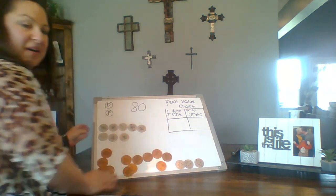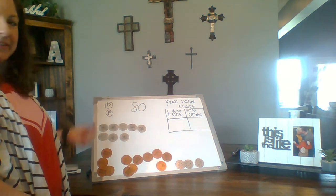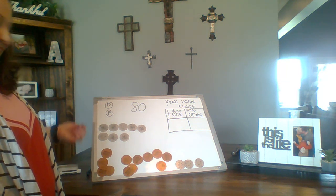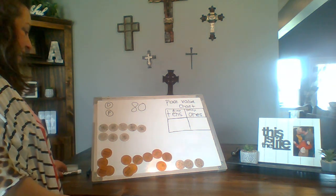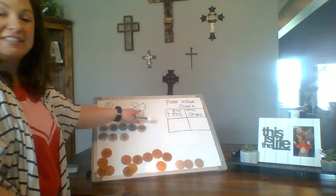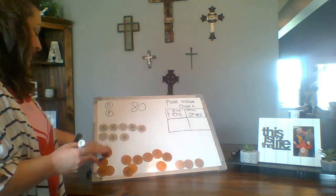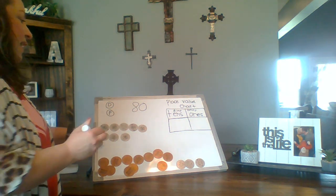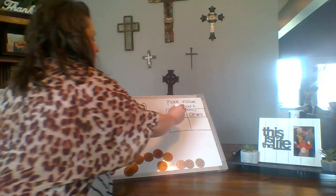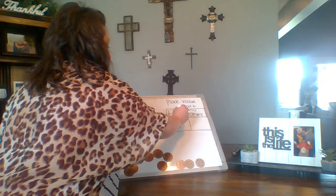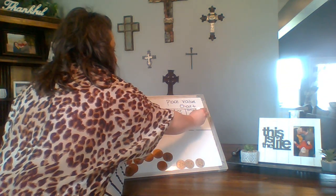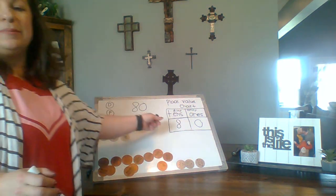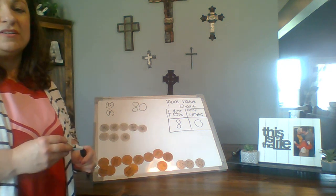Do I need any ones, or did I already reach my number? Yeah, I'm already to 80. There are zero ones — we don't need any pennies. We had 8 dimes and zero pennies. So that is our place value chart.